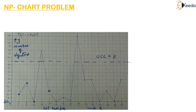For lot 5 the value is 3, lot 6 is 0, lot 7 is 1, lot 8 is 0, lot 9 is 18, lot 10 is 6, lot 11 is 6, lot 12 is 0, lot 13 is 3, lot 14 is 0, and lot 15 is 6. After marking all points, we find that there are 2 points lying above the upper control limit.